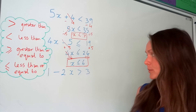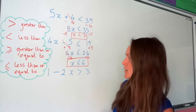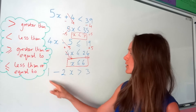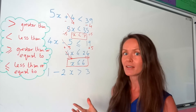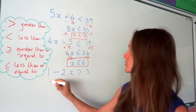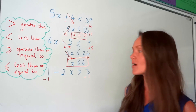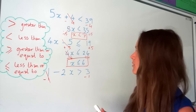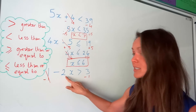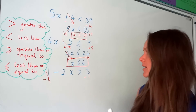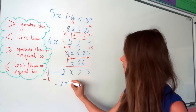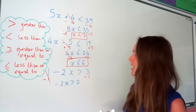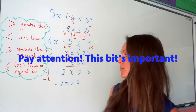On to the next one. Same as before, I'm going to reverse the operations to get x by itself. I'm going to start by subtracting 1 on both sides. 1 minus 1 disappears to 0, and I'm left with negative 2x. Don't forget to write down that negative. On the right-hand side, 3 take away 1 is 2.